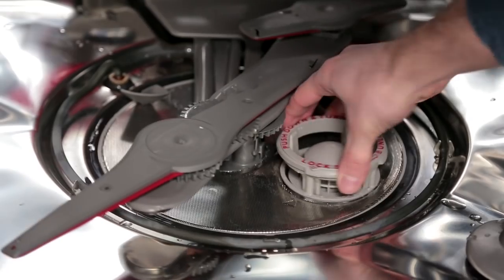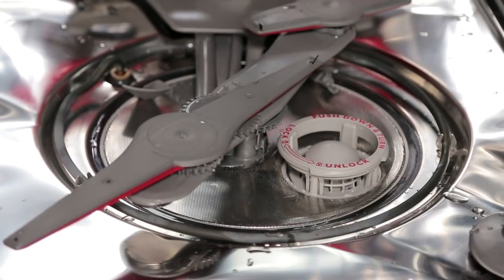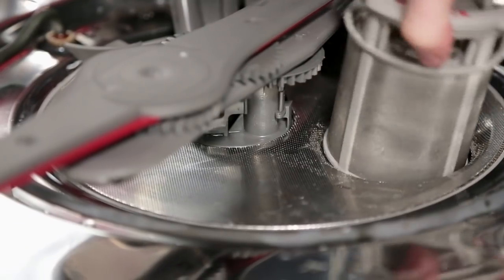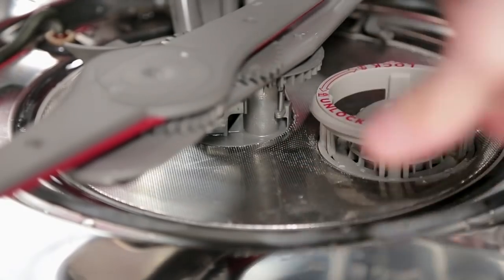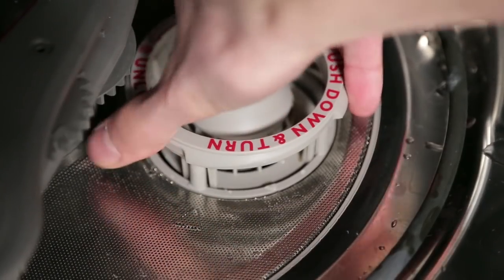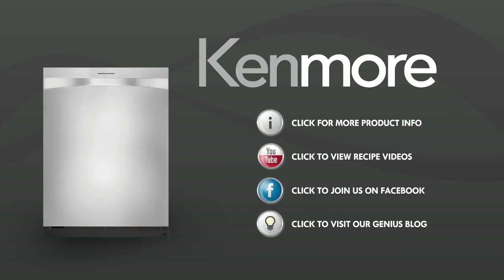Slowly rotate the filter clockwise until it drops into place. Continue to rotate until the filter is locked into place. No one cleans better than Kenmore Elite dishwasher.